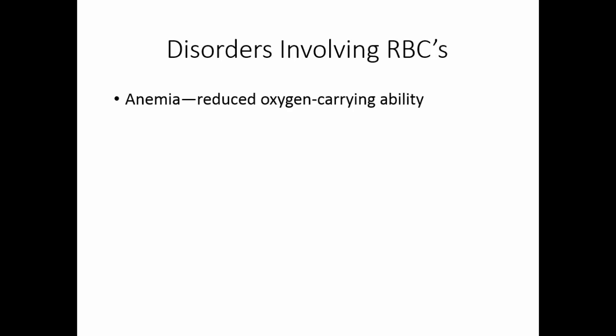Disorders involving red blood cells can be either too few cells or too many. Too few cells gives a reduced oxygen-carrying capacity — a condition known as anemia. Reduced red blood cells can be caused by hemorrhage, called hemorrhagic anemia. If the hemorrhage is sudden, blood can be replaced with a transfusion, but a slow bleed such as a bleeding ulcer causes anemia to come on slowly, requiring finding the source and replacing red blood cells.